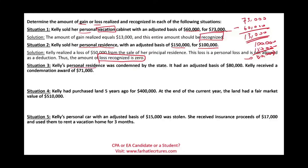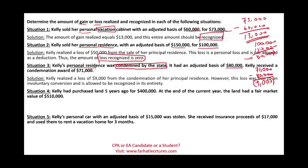Kelly's personal residence was condemned by the state. It has an adjusted basis of $80,000 and Kelly received $71,000, giving a realized loss of $9,000. Is this loss recognized? Yes. You might ask: didn't we just say a realized loss on a personal residence is not recognized? That is correct, but in this situation the residence was condemned by the state — this is an involuntary conversion — and therefore the entire loss of $9,000 is recognized.